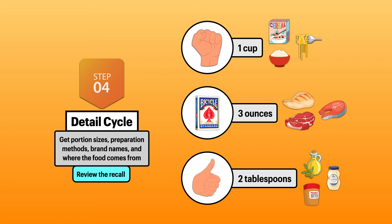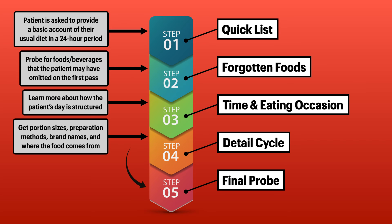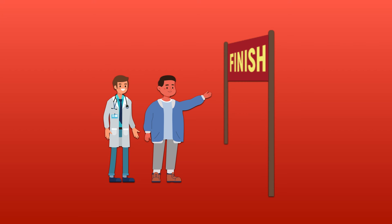One more thing you can do here is a final review of the recall and ask probing questions about any gaps you've identified. For example, if you notice there's a window from 12pm to 7pm where the patient doesn't eat or drink anything, this would be the appropriate time to point it out. After you get all the details for portion sizes, preparation methods, brand names, and where the food came from, you're ready for the final probe. In this step, the patient is asked if there's anything else they'd like to add to the diet recall. When the patient has nothing more to add, the process is finished.